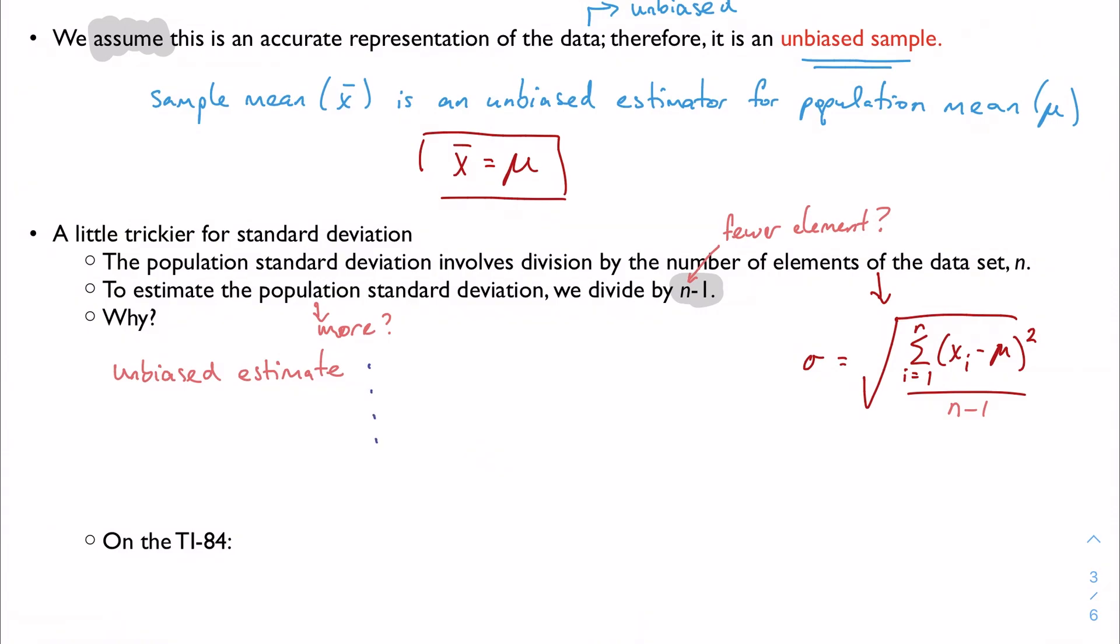So now that I've rambled, let me actually write some of this down. Dividing by n minus 1 gives us a higher standard deviation, and this gives us some wiggle room, so to speak, just to say that we want to make sure and account for any extreme elements or any possible outliers in the population not present in the sample.